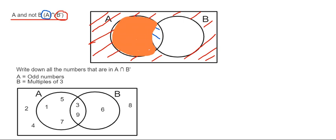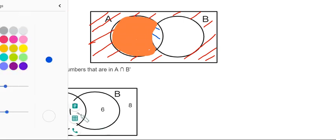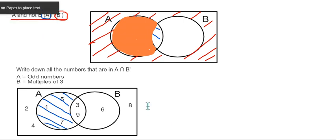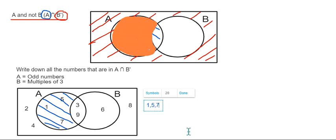And set B we have the multiples of 3. So the area that we need then is this bit of the Venn diagram here. So if we just write these numbers down, we have 1, 5, and 7.